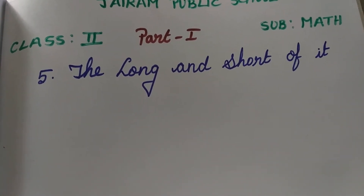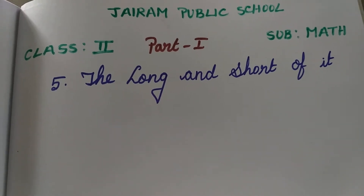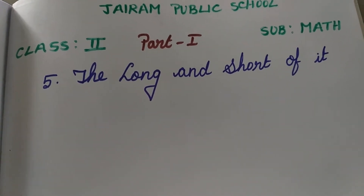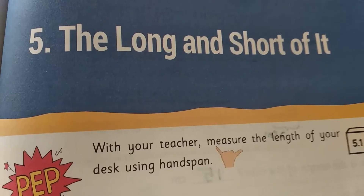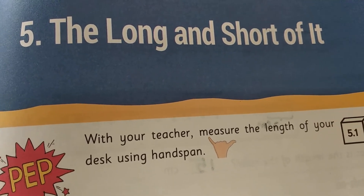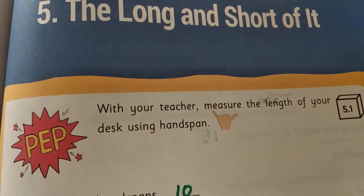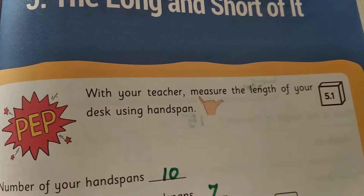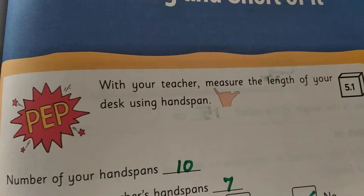Kanna, everyone take your Mac Studio. Take your pencil along with your Kanna. Take your Mac Studio, page number 81. We are going to see the pip activity 5.1.